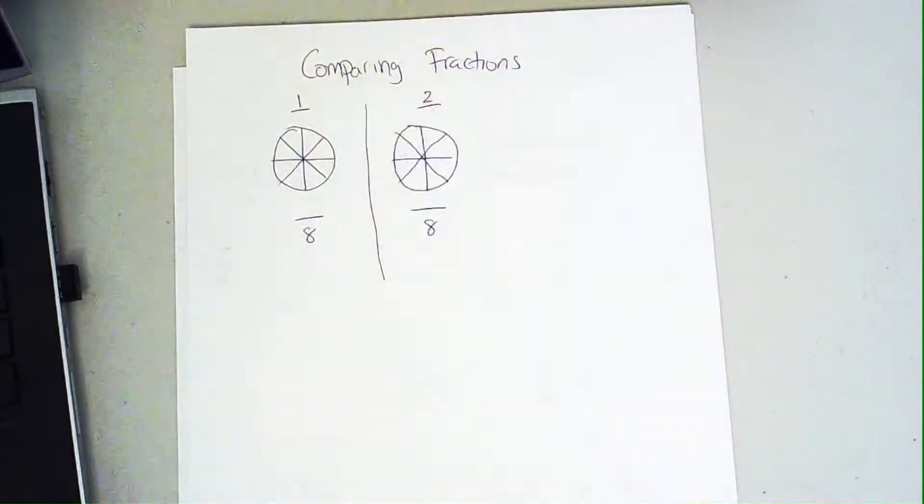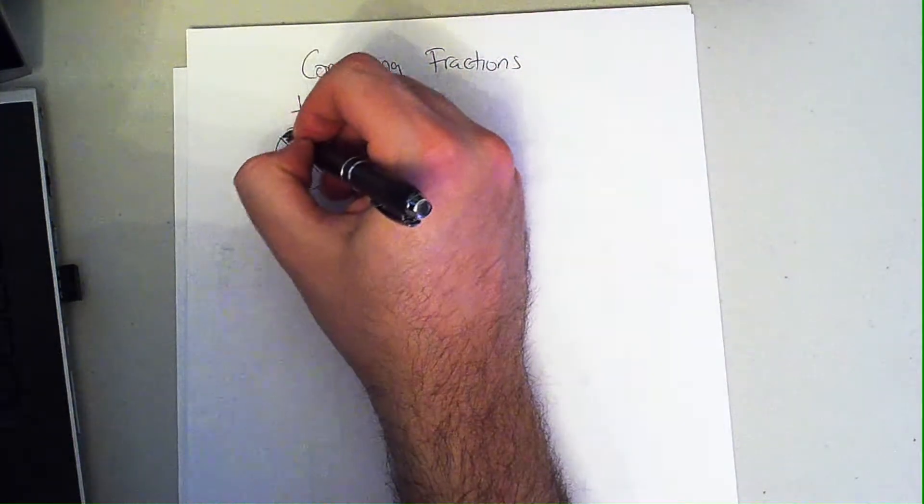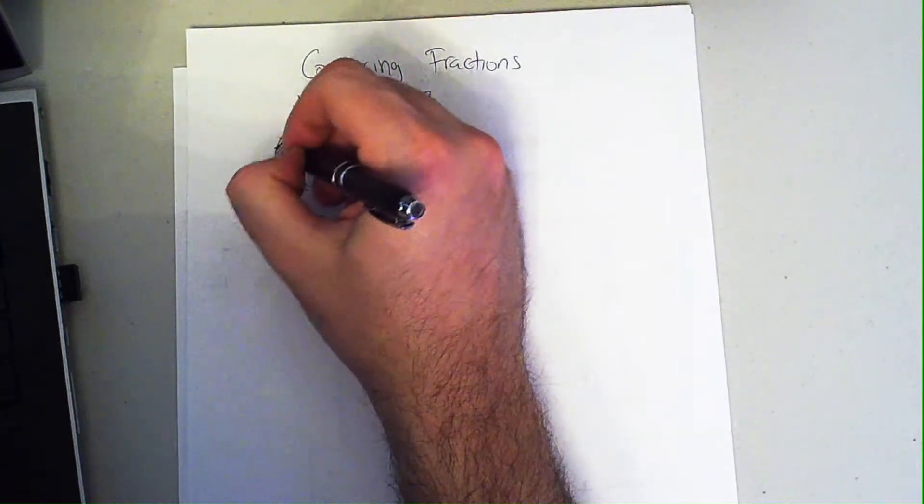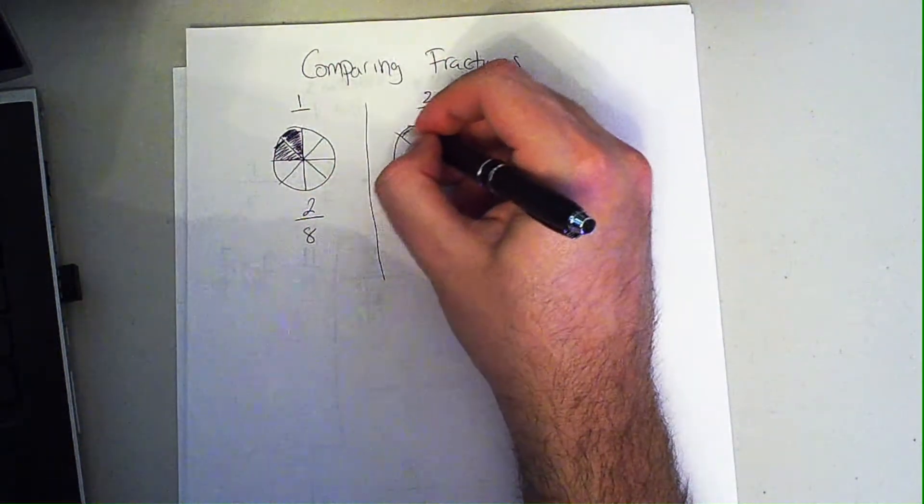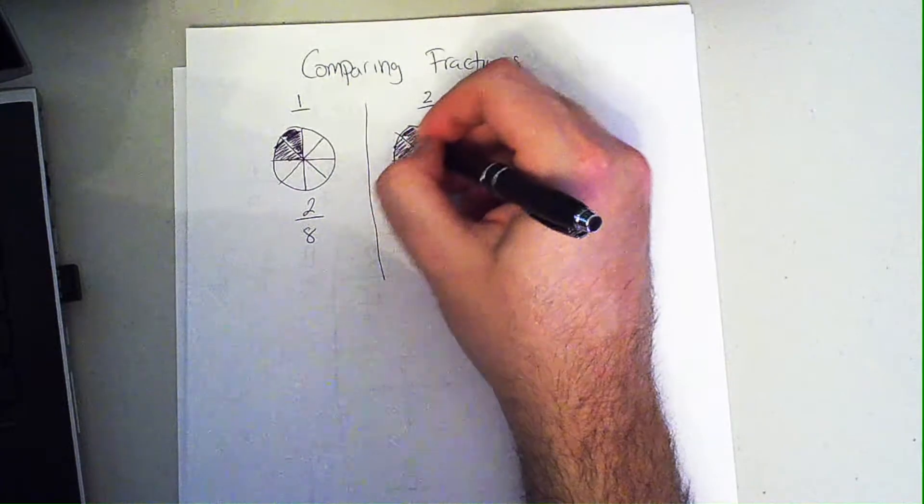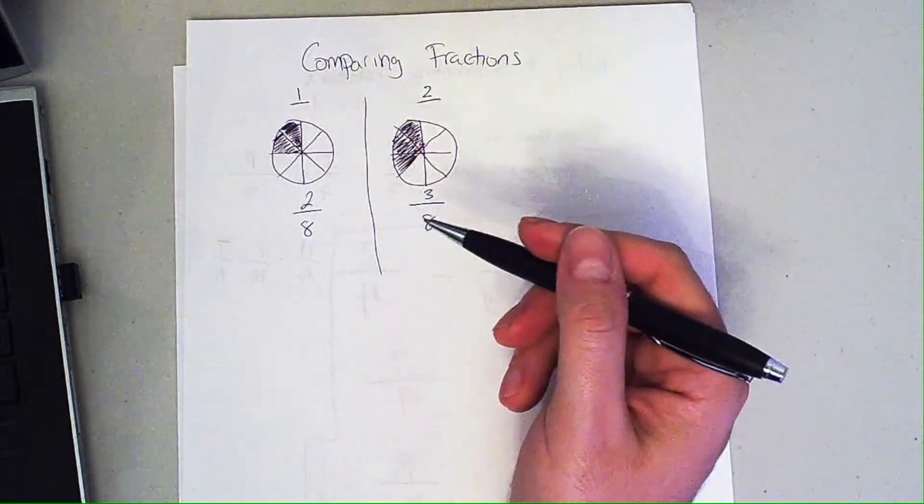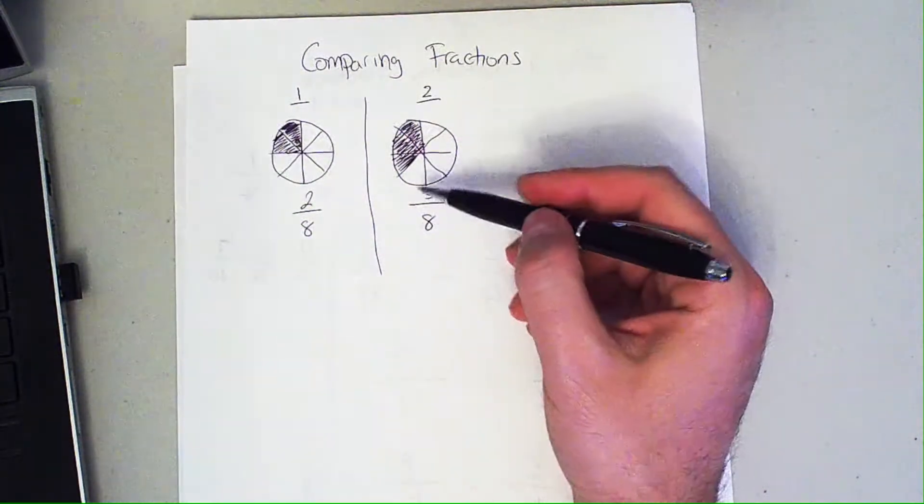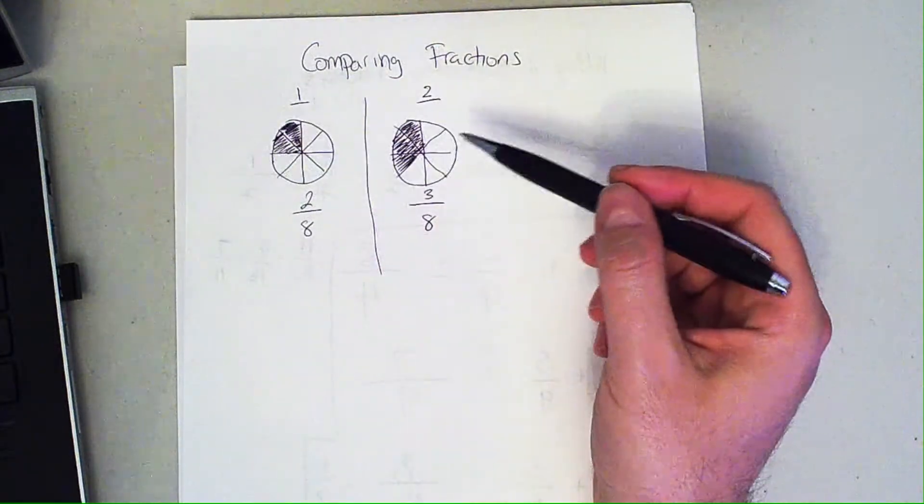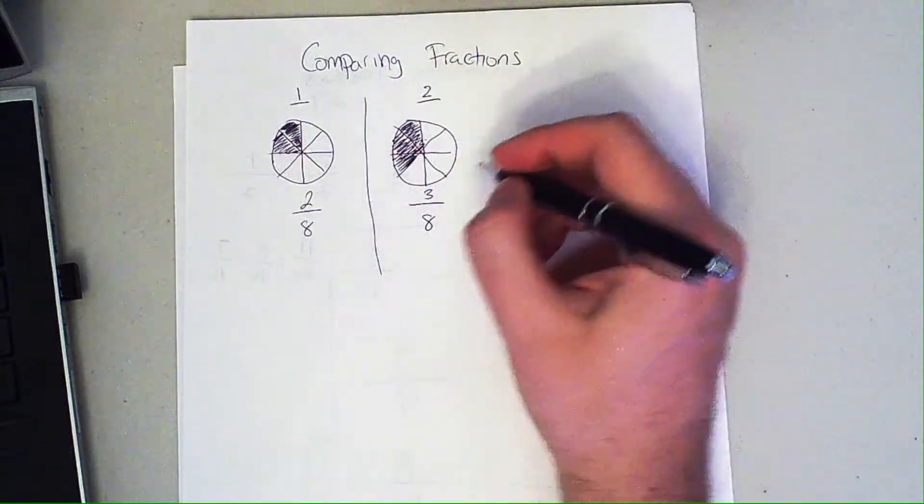Which fraction is the greater number? Let's start off here. We're gonna shade in two pieces, so that's 2/8. And here we are going to shade in three pieces. Let's look at who ate more pizza. This person had three slices, this person had two slices. Both pizzas are the same size, both are cut up into eight pieces, so this is the larger fraction.